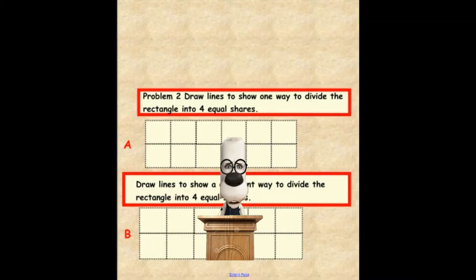Okay, here we are on problem two. Now, you will notice in problem two, we again have A and B. And you notice these rectangles are a little bit larger. What we'd like for you to do for A is to draw lines to show one way to divide the rectangle into four equal shares.